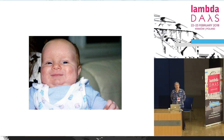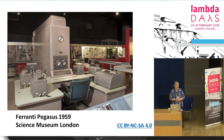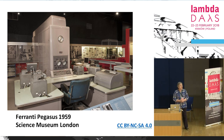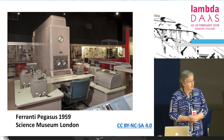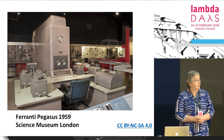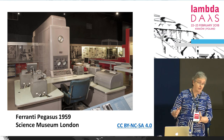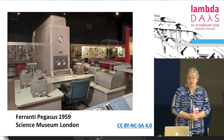Let's think back to 1959. Here's an example of a magnificent British computer called the Ferranti Pegasus. This particular one is at the Science Museum in London, unfortunately no longer on show. It was built in 1959, weighed 3,820 kilos, cost 50,000 pounds despite not having any input or output devices, and had 56 words of storage. 40 of them were sold — 26 Pegasus 1 and 14 Pegasus 2 — and it was considered a huge success.